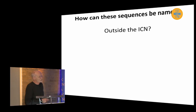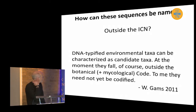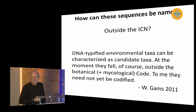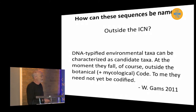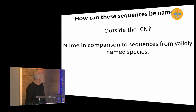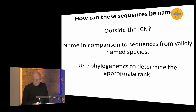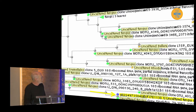I want to talk more about how to do it outside the international code. Walter Goms sent an email saying: DNA-typified environmental taxa can be characterized as candidate taxa. At the moment they fall outside the botanical/mycological code. To me they need not be codified. So outside the code, we don't have to worry about the code — that could be a good thing. We would name them by comparison to sequences from validly named species, and use phylogenetics to determine the appropriate rank.